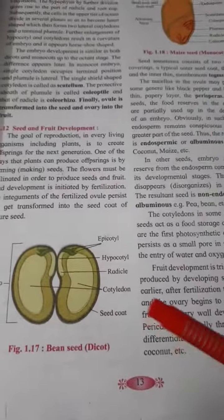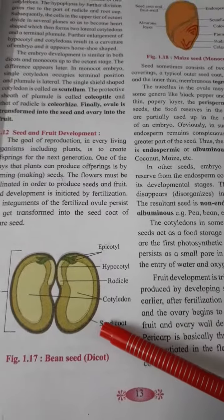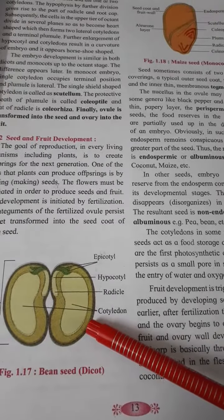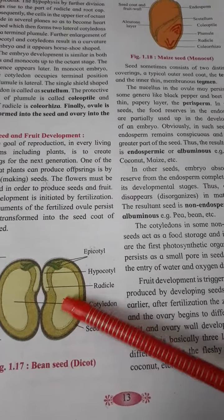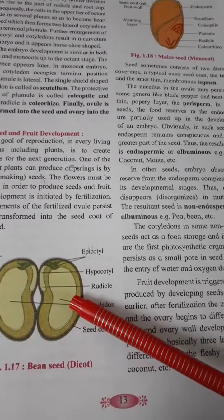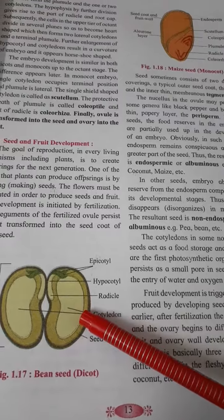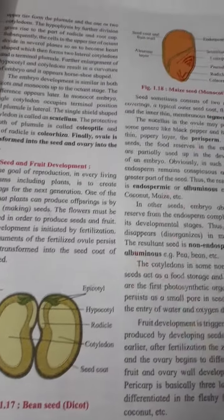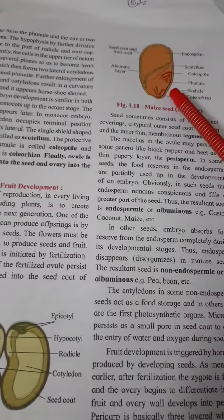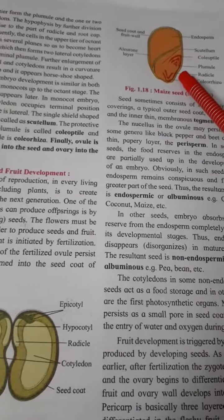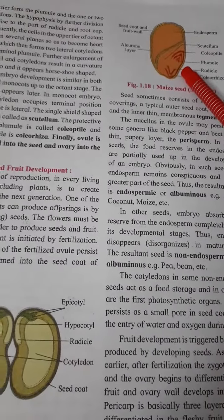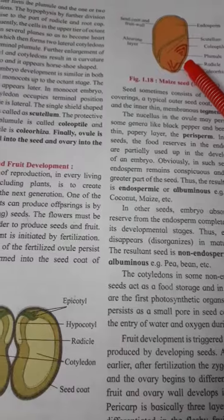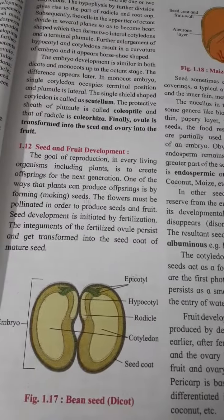So these are endospermic and non-endospermic seeds. Here we have bean, which is a non-endospermic seed, and maize, which is an endospermic seed.